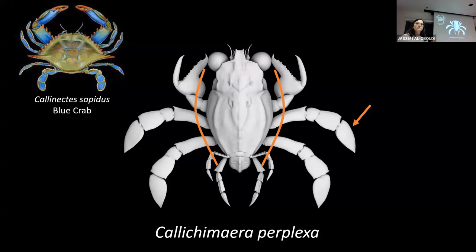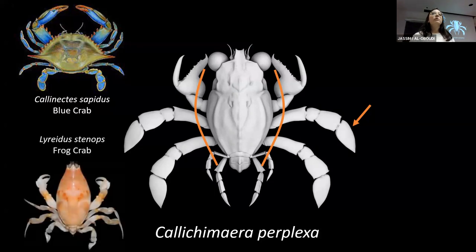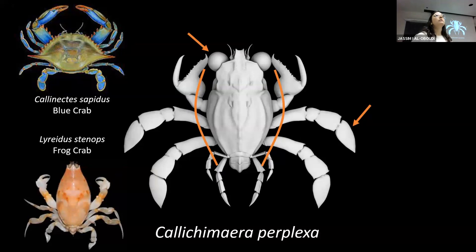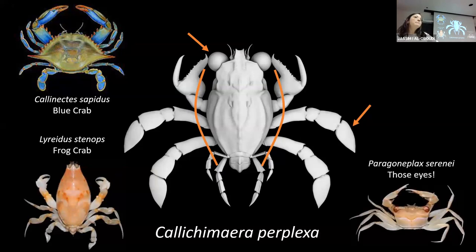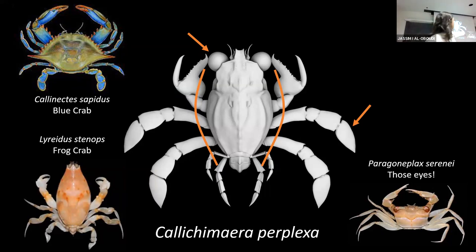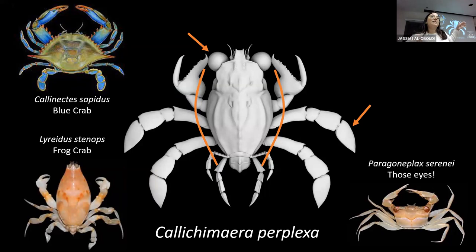Unusual feature number two is this fusiform, streamlined body shape. We do see this in frog crabs, which are fossorial and need a slender body to wedge into sediments. And then finally, these absolutely humongous eyes — about 16% of the animal's body size. For comparison, if my eyes were 16% of my body size they would be the size of a basketball. We do see large eyes in some deep-sea crabs that hunt using bioluminescence, but those crabs can retract their eyes into the body on eyestalks. Calychimera cannot do that.